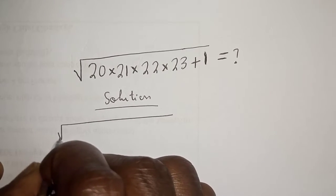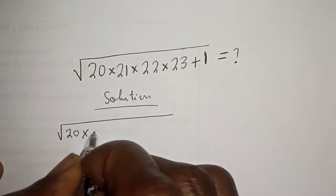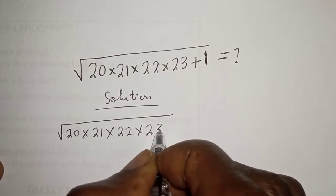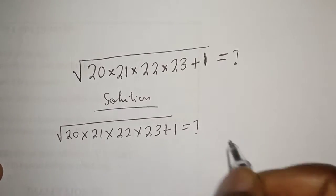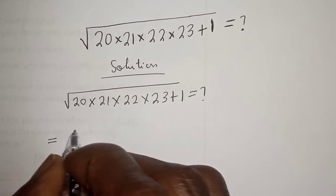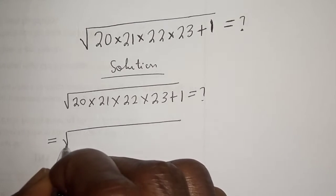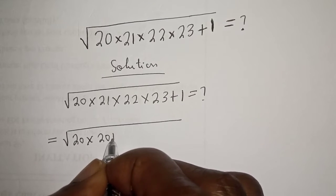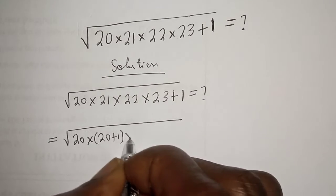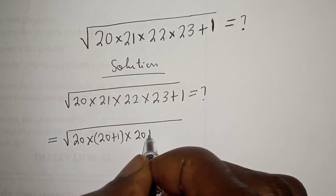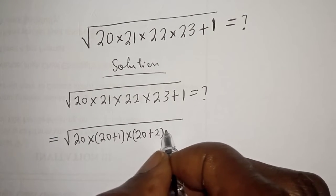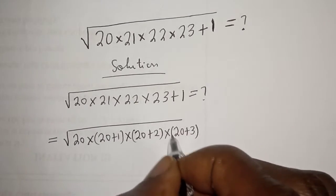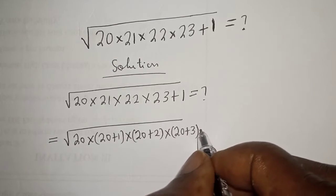Square root of 20 multiplied by 21 multiplied by 22 multiplied by 23 plus 1 is unknown. We can rewrite: 20 as itself, 21 as 20 plus 1, 22 as 20 plus 2, and 23 as 20 plus 3, plus 1 outside.